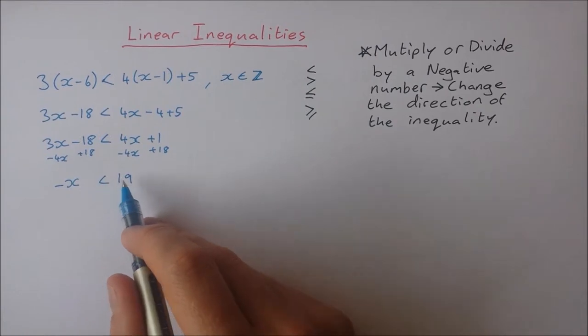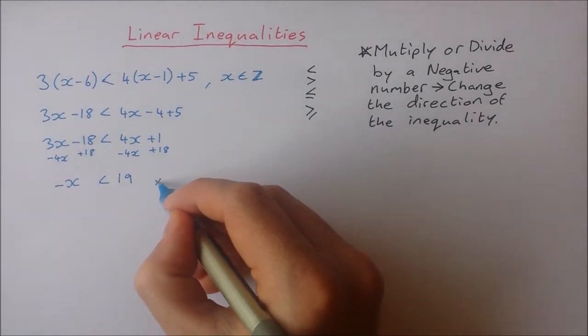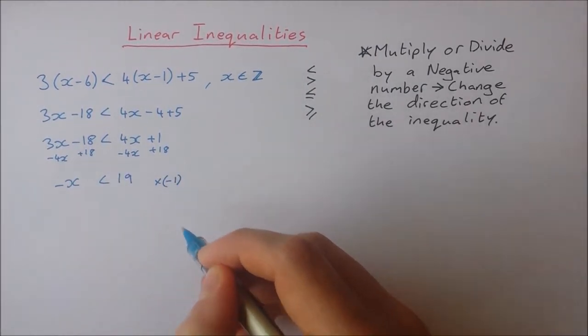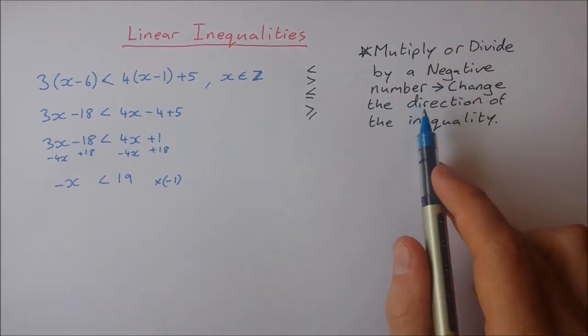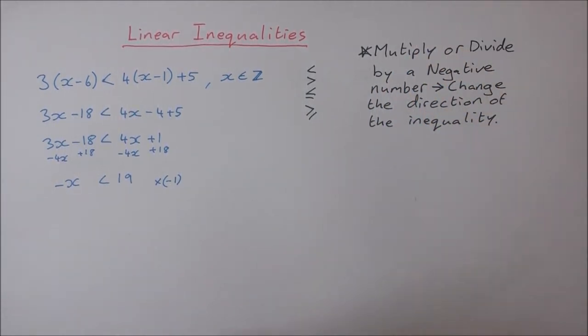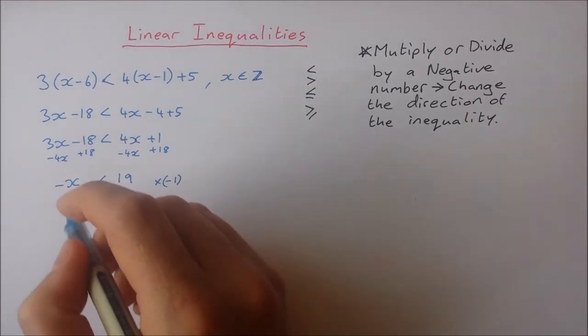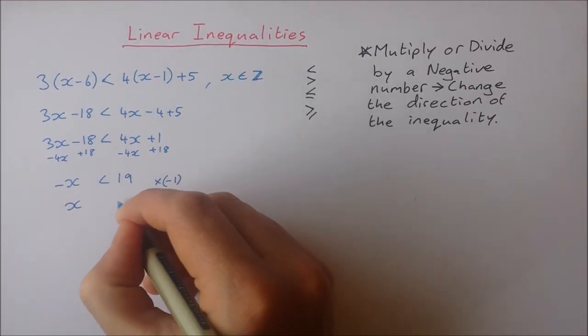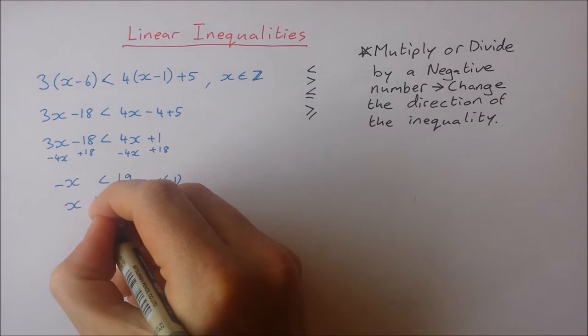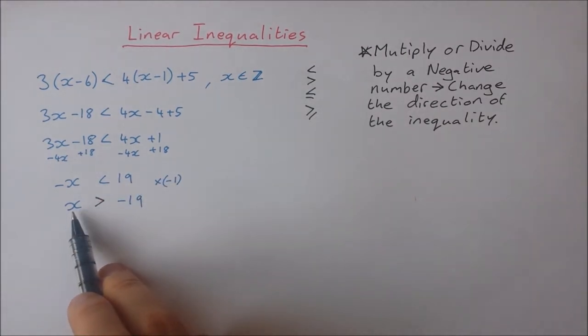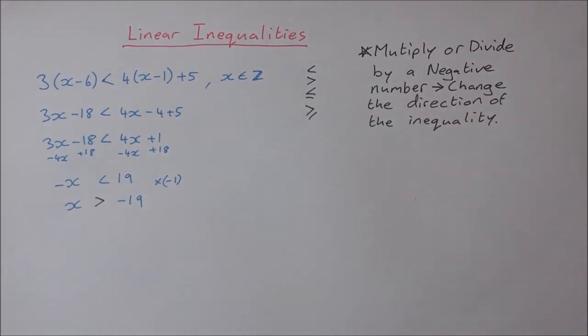Now I have minus x is less than 19 so I'm going to have to multiply by minus 1. Now remember this rule here. If I multiply or divide by a negative, I need to change the direction of the inequality. So I'm multiplying by minus 1, I get x and I get minus 19. But now in the middle of the inequality, my inequality sign will change direction and it's x is greater than minus 19.